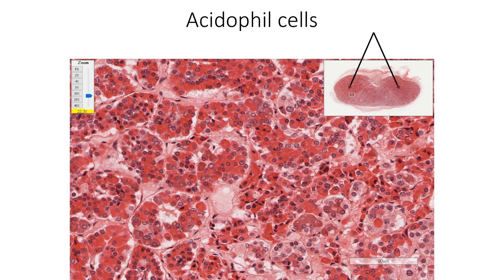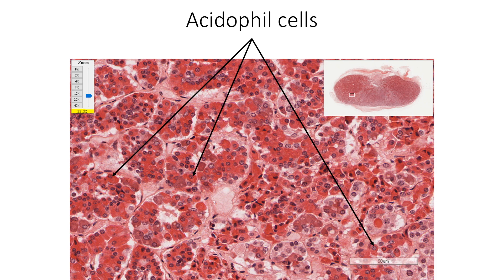Acidophils occupy predominantly the lateral wings of pars distalis. Two types of cells make up the acidophils: somatotrophs, secreting growth hormone, and mammotrophs, secreting prolactin. These two types of cells cannot be distinguished in routine H&E stained sections.